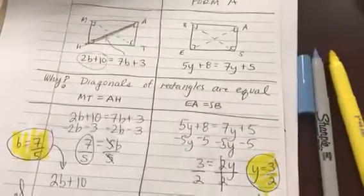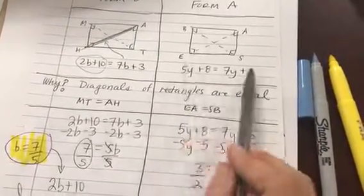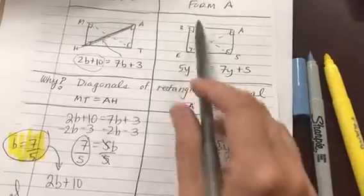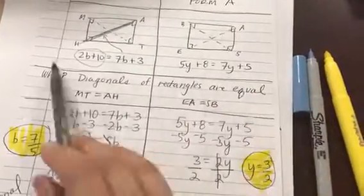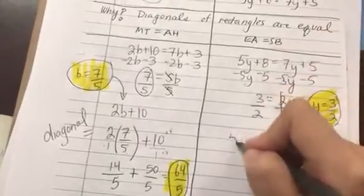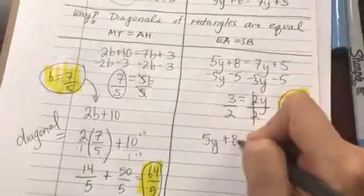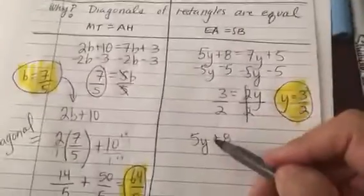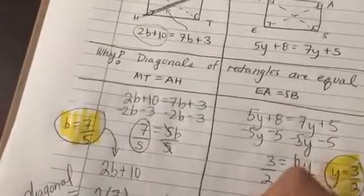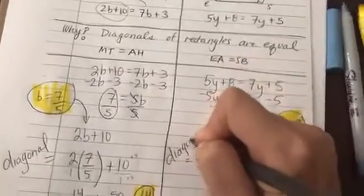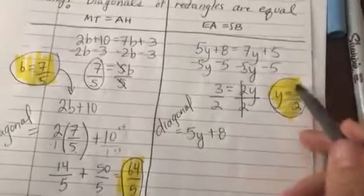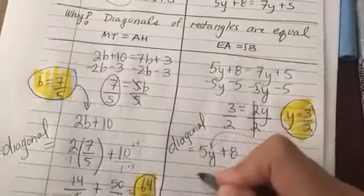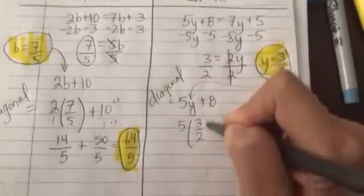Now again, in the same way, I can plug Y back into either the left or the right because this side is one diagonal, this side is the other diagonal. And I know that diagonals of rectangles are equal. So I'm going to write the one with the 5. 5Y plus 8 is one of the diagonals. And so that's equal to the diagonal. Y, I've solved the mystery of the Y. It is three halves.